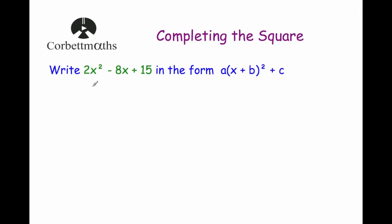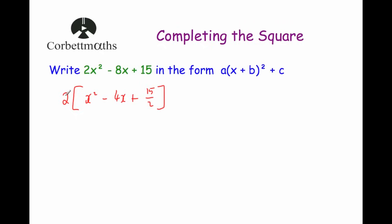We're going to look at the expression 2x² minus 8x plus 15, and because it's got a 2 at the front we're going to factorize by taking that 2 out. So we open up square brackets and take the 2 out, giving us x squared minus 4x. Then 15 is not a multiple of 2, so we write 15 over 2, because 15/2 times 2 would be 15.